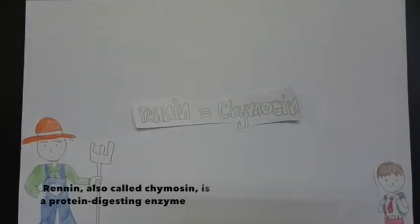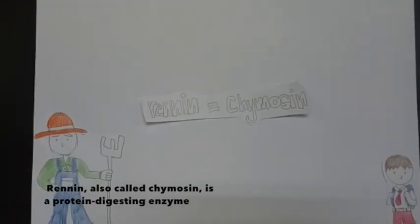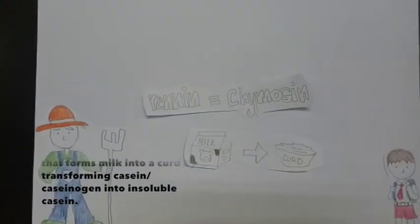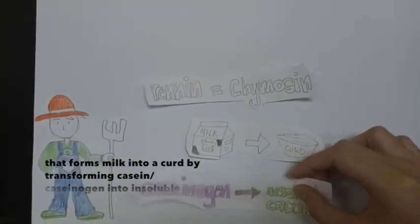What is renin? Renin, also called chymosin, is a protein digesting enzyme that forms milk into curd by transforming soluble casein or caseinogen into insoluble casein.